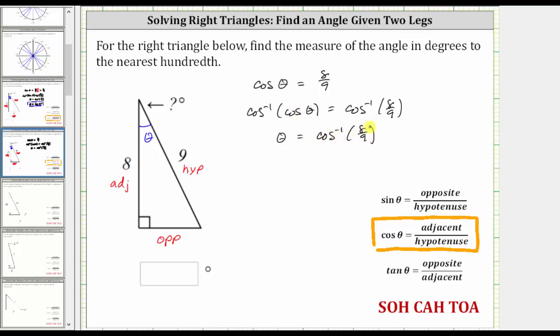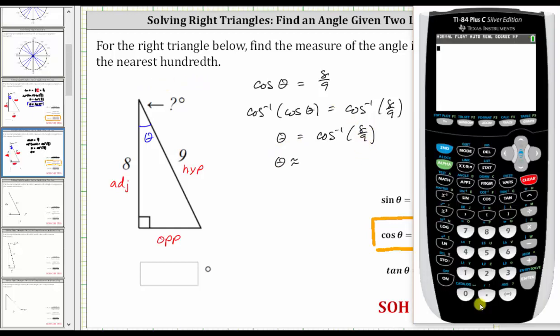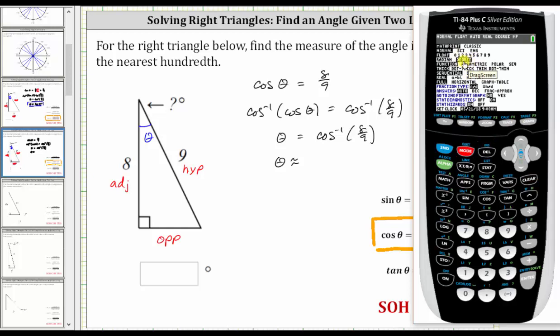And now we go to the calculator to get a decimal approximation for angle theta in degrees to the nearest hundredth. We begin by making sure the calculator is in degree mode by pressing the mode key, and notice how degree is highlighted. If degree was not highlighted, we would use the arrows to go down to degree and then press enter.